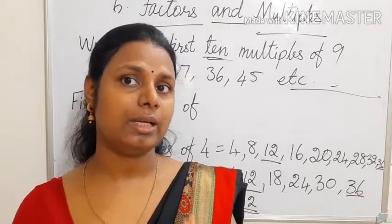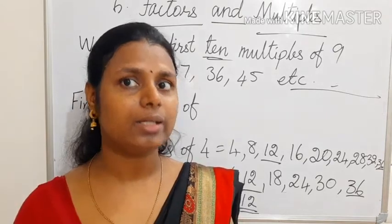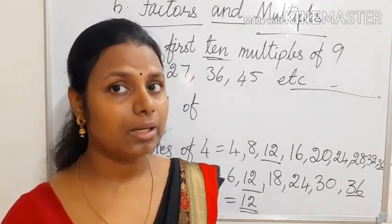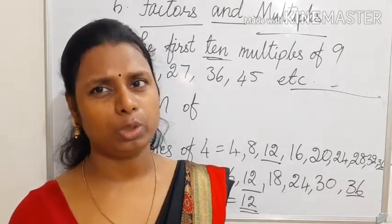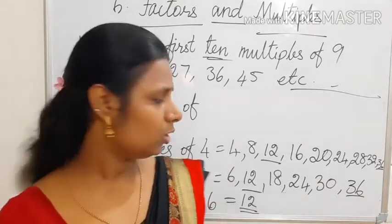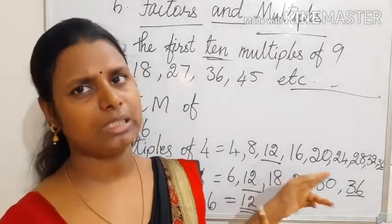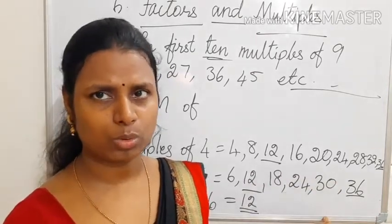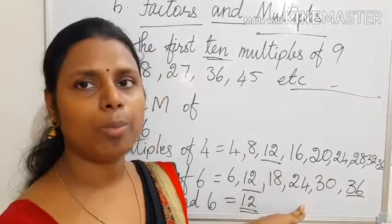It is very simple. In factors, you wrote the factors of those numbers and selected the greater common factor, the highest common factor. But here, LCM means lowest, least common multiple you have to select. You write the multiples—at least a minimum of 5 numbers, or 10 numbers. After that, you select the common one.